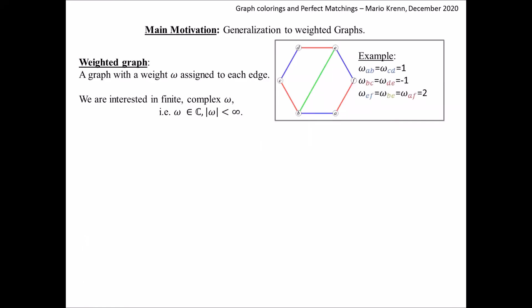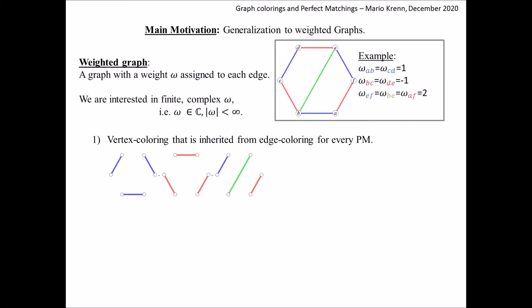Let me now explain the rules of the game in detail. A weighted graph has a weight omega assigned to each of its edges; here we allow the weights to be any finite complex number. In this example, some weights are plus 1, some are minus 1, and some are plus 2. We now calculate the perfect matchings, and we can see that every vertex has exactly one edge connected to it, so it has exactly one color associated to it. In our new vertex coloring, every vertex gets the color of its connected edge.